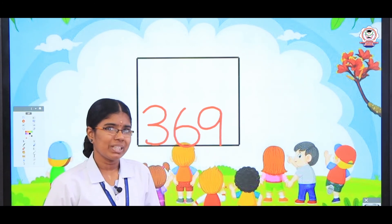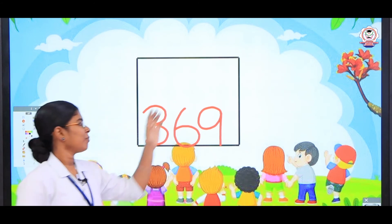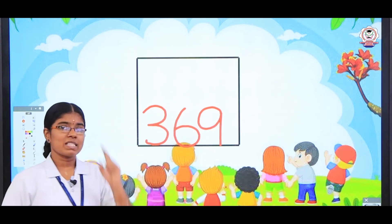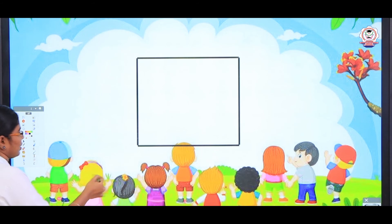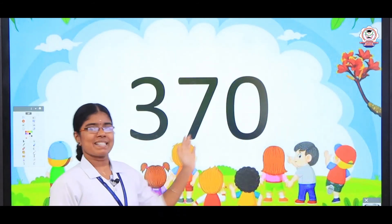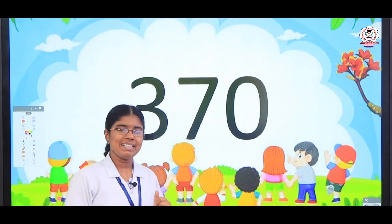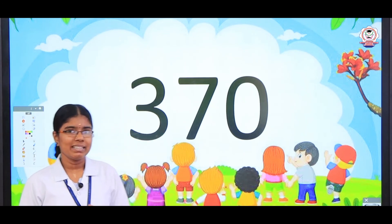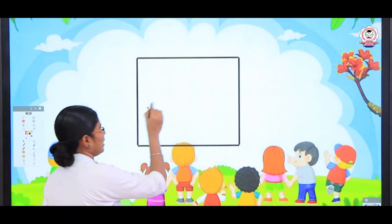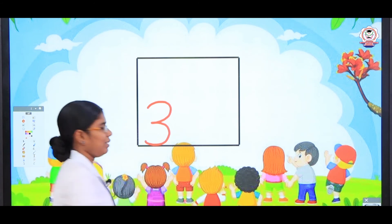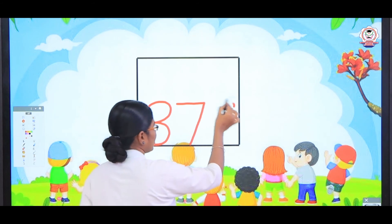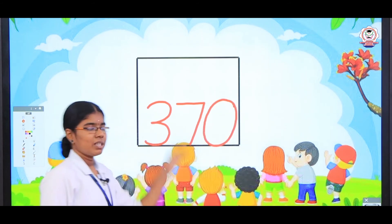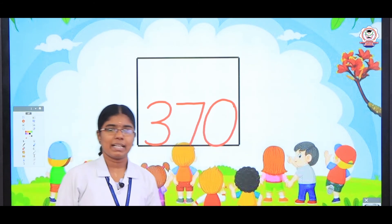Now what we are going to do? Yes, we are going to change the tens place as well as the ones place value to get the next number. See here: 3, 7, 0 — 370. How to read this number? 370. Let's write this number — 3, 7. How to write 7? Sleeping and then slanting. And then a closed curve, circle. So 3, 7, 0 — 370.